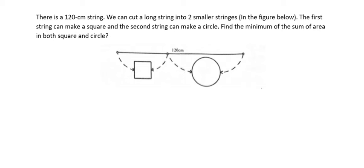Hello everybody, today I will talk about calculus. We have a question: there is a 120 centimeter string we can cut into two smaller strings. As shown in the figure, the first string can make a square and the second string can make a circle. Find the minimum of the sum of area of both the square and the circle.